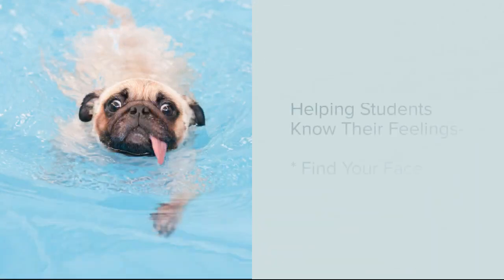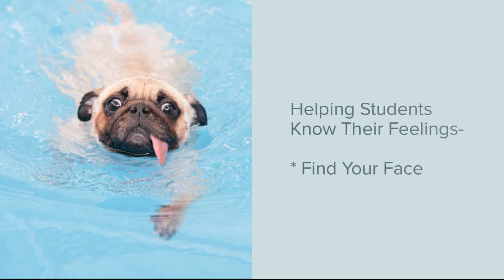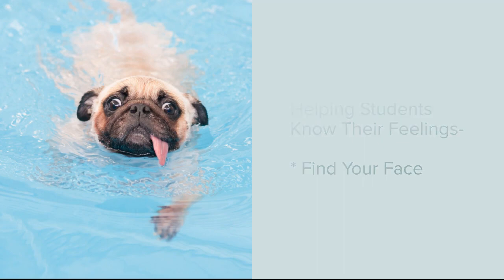Emotional literacy begins with the ability to know or identify your feelings. To help students develop this skill, teachers can use the find your face strategy, which presents students with various images of people, emojis, or animals like the one shown here, and ask them to select the image that best expresses how they are currently feeling. Through discussion of their choice, students learn to label and describe their emotions.